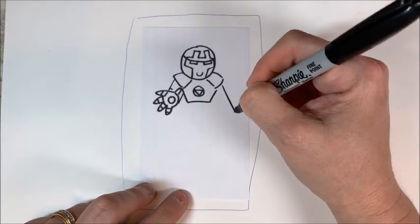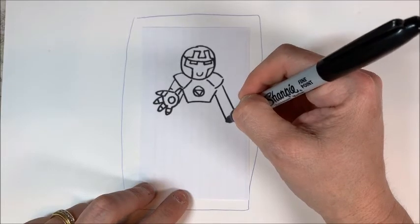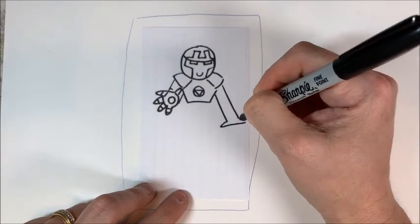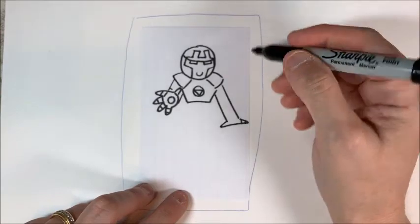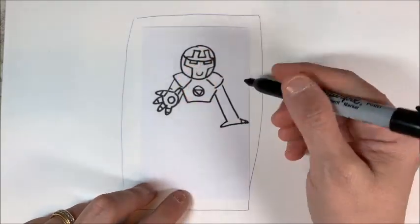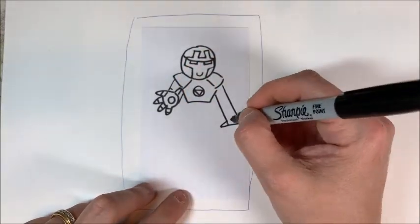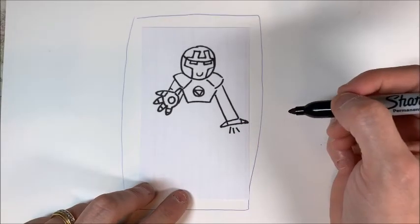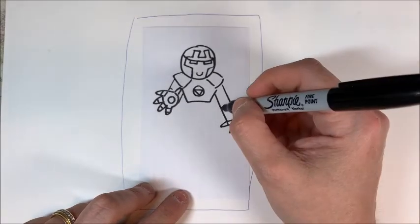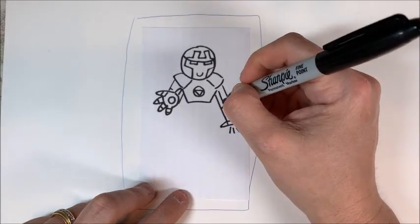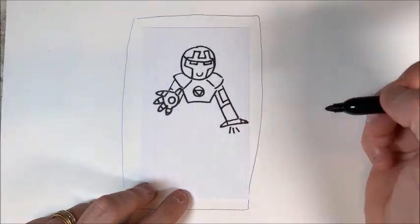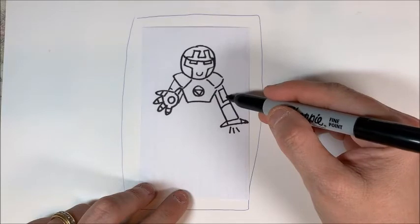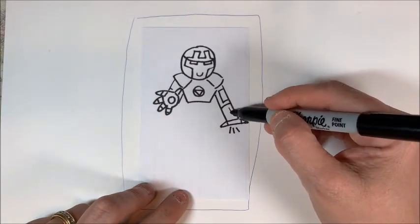And this arm, similar to Black Panther, will be down, thumb out and the fingers out. His hand is flat, so we won't see anything else, just the one. Now we have a repulsor light shining that we're going to draw.